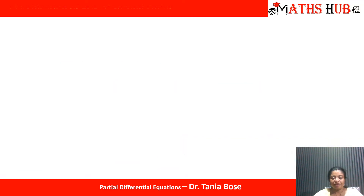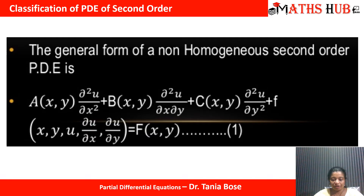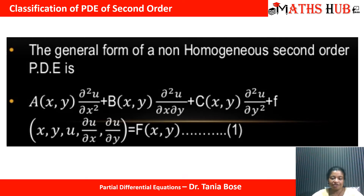How do we classify a second order partial differential equation? First, let us understand how the second order PDE looks like. When we talk about a second order PDE, we are only interested in the second order terms — the rest of the terms are ignored. The second order terms are: ∂²u/∂x², ∂²u/∂x∂y, and ∂²u/∂y².